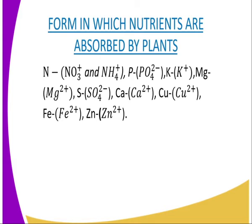Then we have copper, which is also absorbed by the plant. Copper is absorbed in the form of copper ions, that is Cu2 to the power 2 positive — that is the charge. Then iron is absorbed in the form of ions, that is 2 positive — that is the charge. And finally, zinc is absorbed in the form of zinc ions, that is Zn to the power positive 2, as the charge of the zinc ion.